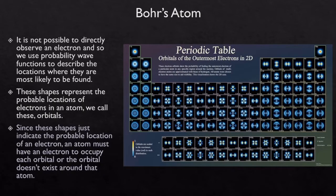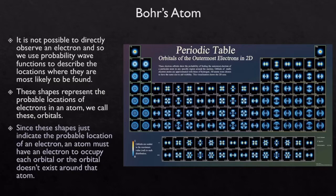It's not possible to directly observe an electron, and so we use probability wave functions to describe the locations where they're most likely to be found. That's what these shapes are — just the mathematical representations of where electrons are likely to be found around the nucleus of an atom. Since these shapes just describe probable locations, we call these orbitals. An atom must have an electron to occupy that orbital, or the orbital does not exist around that atom. It only exists if there's an electron there to occupy that space.